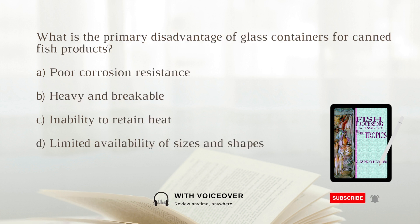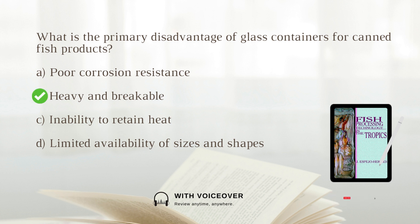What is the primary disadvantage of glass containers for canned fish products? A. Poor corrosion resistance. B. Heavy and breakable. C. Inability to retain heat. D. Limited availability of sizes and shapes. Answer: B. Heavy and breakable. Glass containers are heavy and breakable, making them less favorable for commercial use despite their advantages.